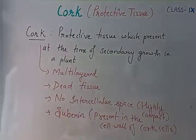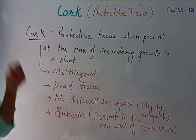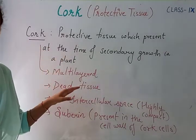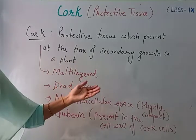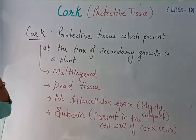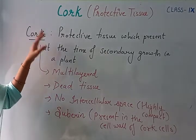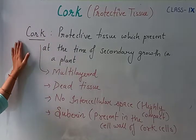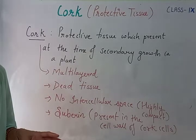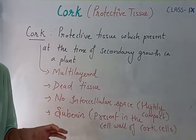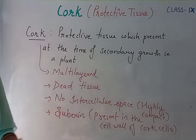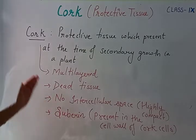So today we are going to talk in detail about this kind of protective tissue which replaces the epidermis in the case of woody plants, or we can call them trees, at the time of maturity. That epidermis is replaced by a protective tissue which we are going to call cork. This is mainly present at the stem part — that is the trunk of the tree — and the roots at the time of secondary growth.